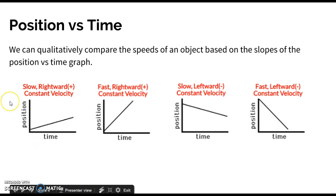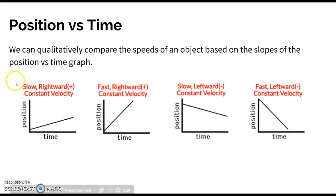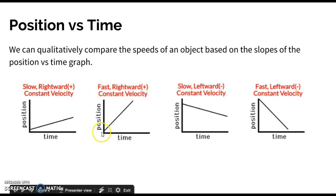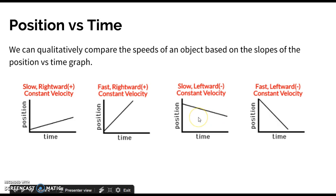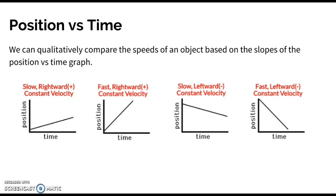On the left, we have a position versus time graph with a gradual positive slope — calling rightward positive, that's a slow rightward constant velocity. The next graph has a steeper positive slope, so that's a fast rightward constant velocity. Then we have a negative slope for a slow leftward constant velocity. Finally, a steep negative slope means a fast leftward constant velocity.